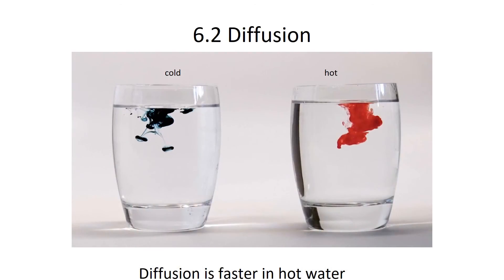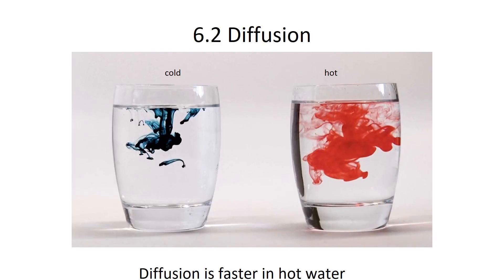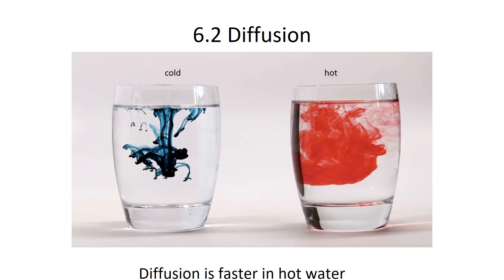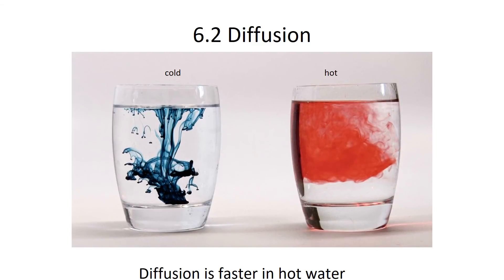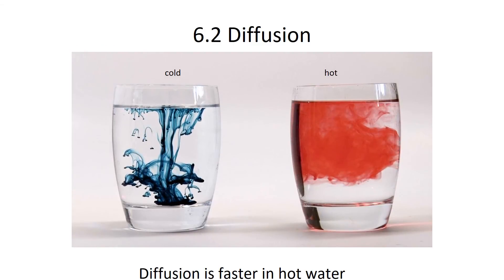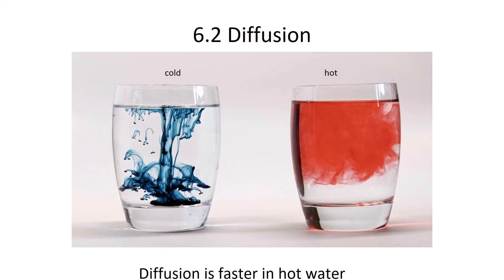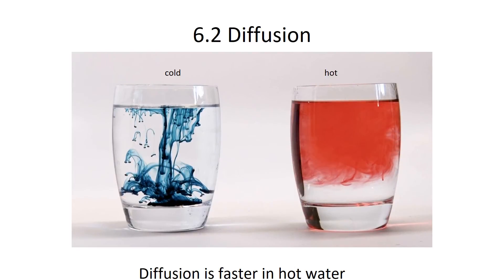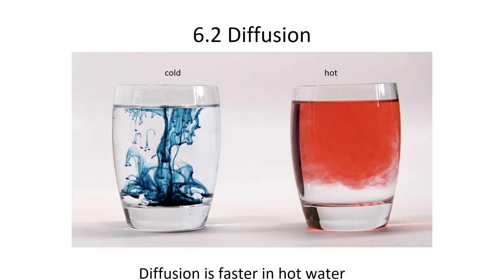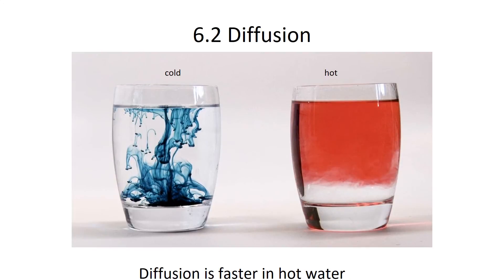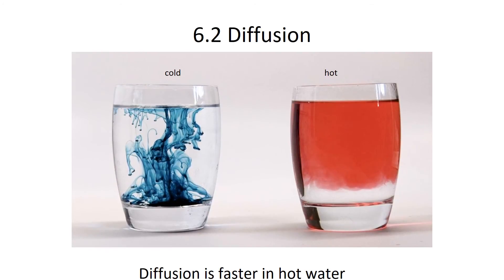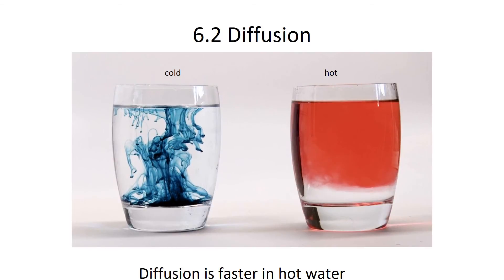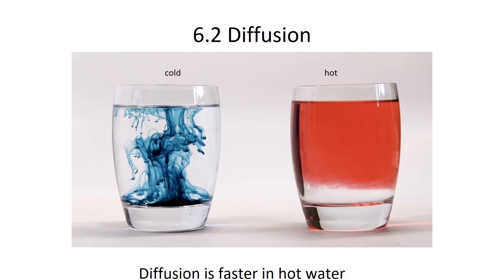Here's an example showing why energy is required for diffusion. On the right is a glass of water heated to about 200 degrees; on the left is a glass cooled to about 35 degrees. Already, the dye on the right side is almost completely diffused throughout the glass, while on the left the dye is still slowly moving. The warmer the environment, the faster diffusion occurs, because more energy is present.